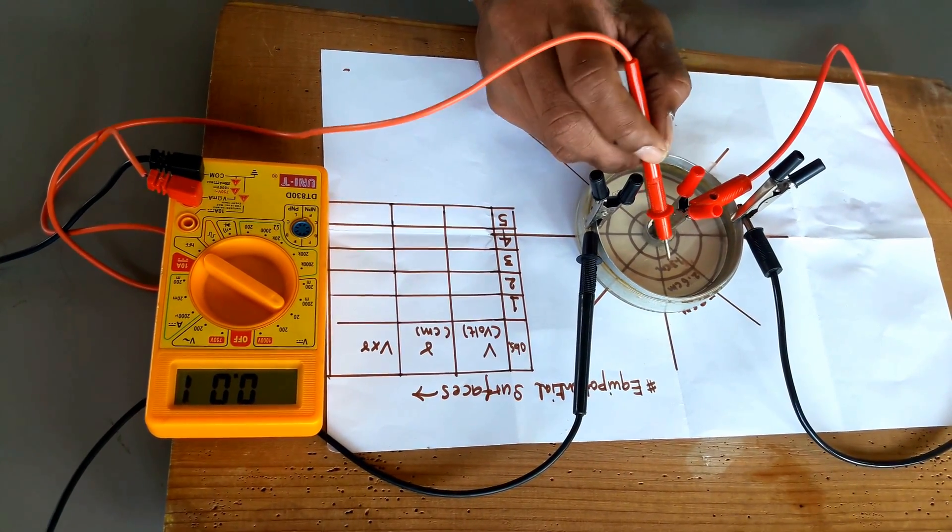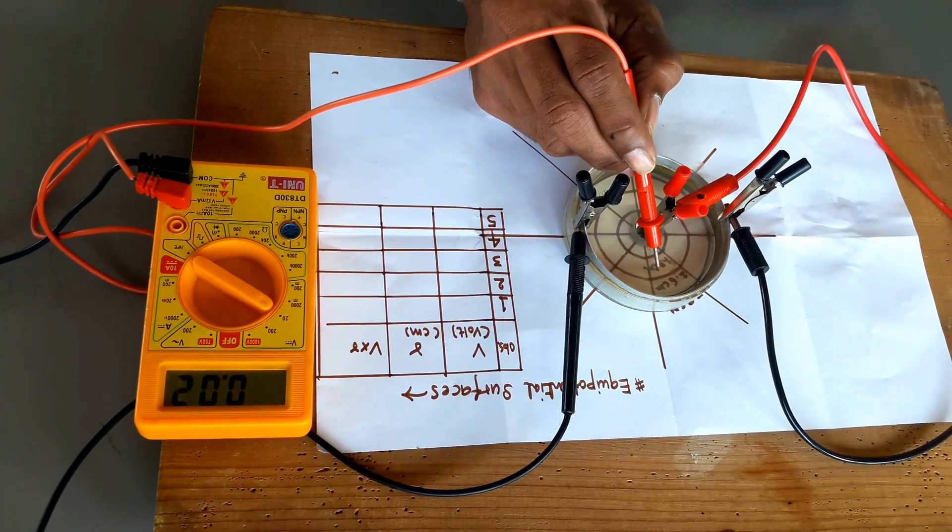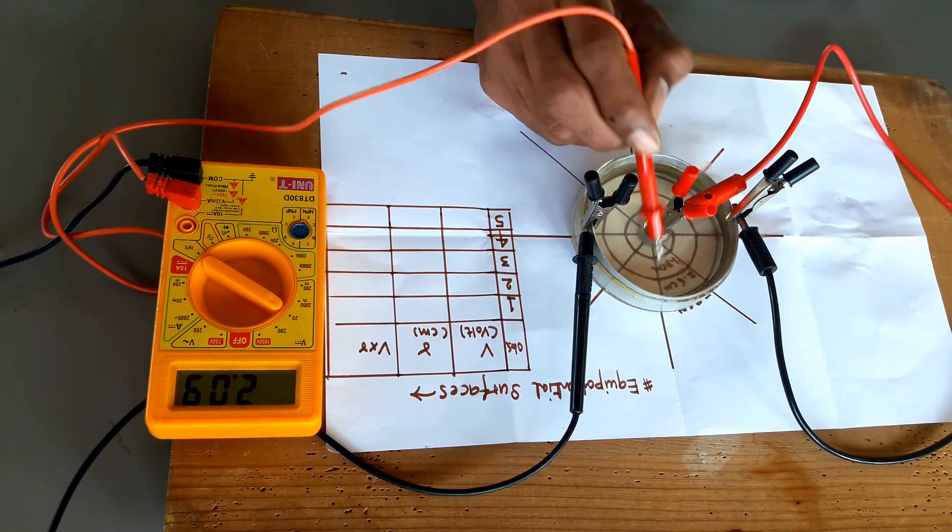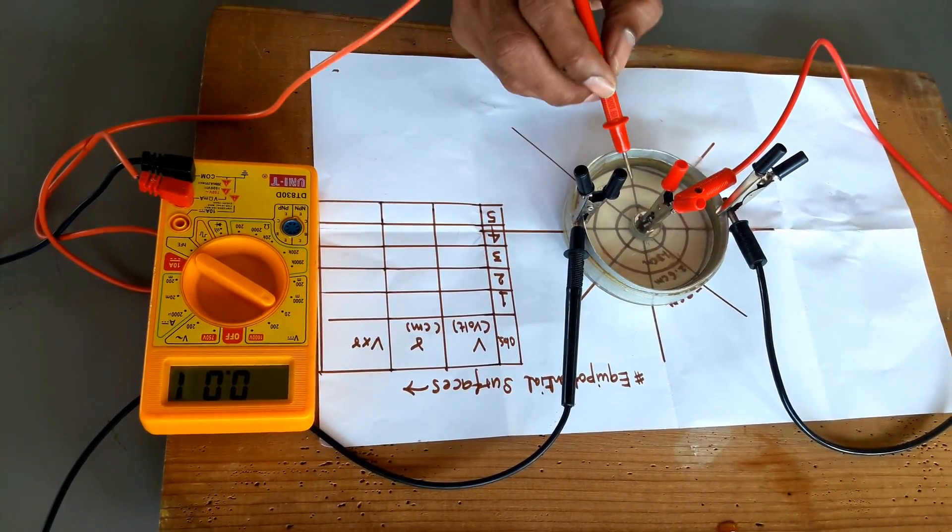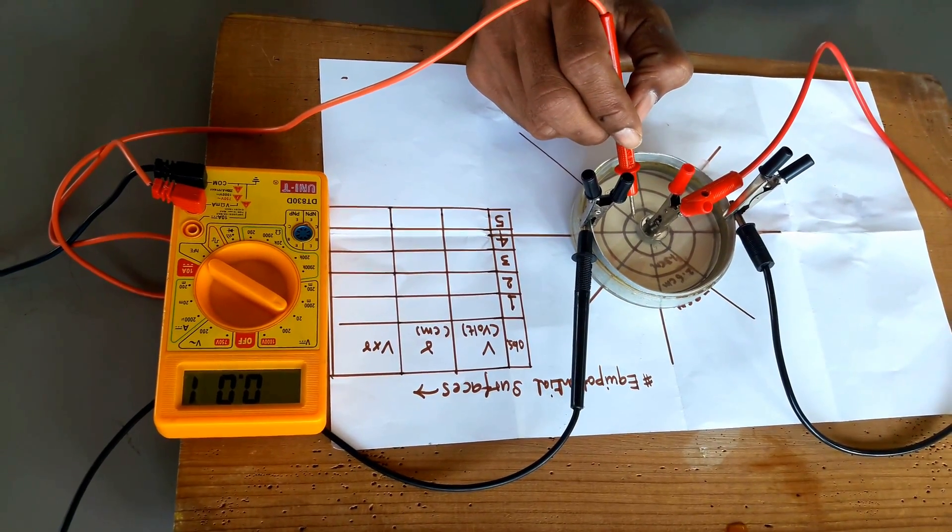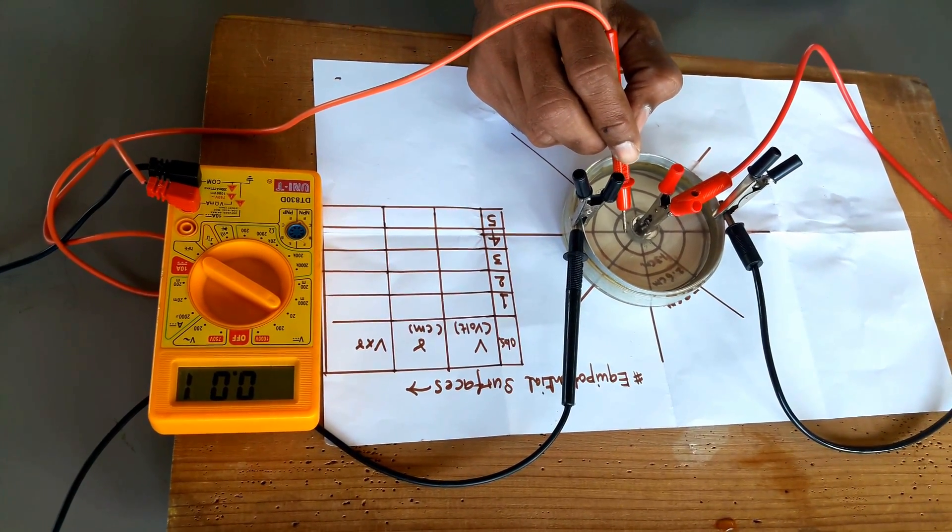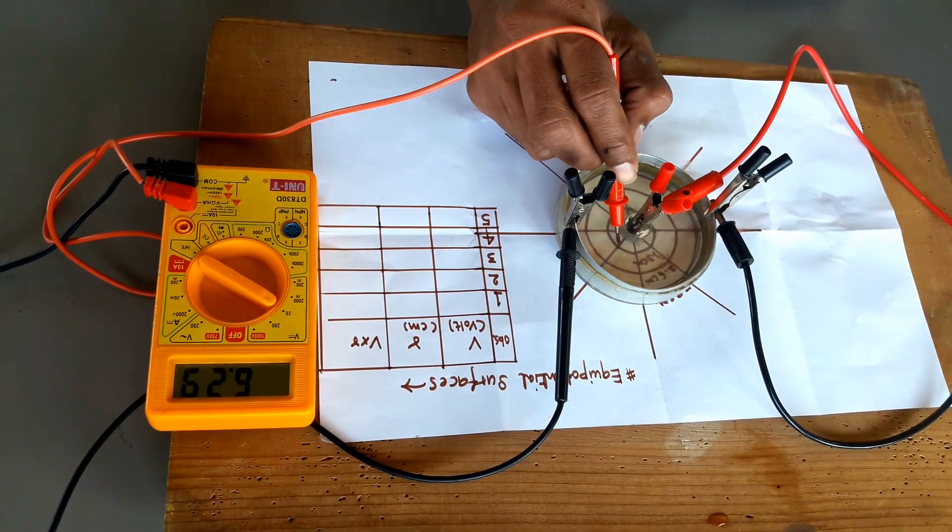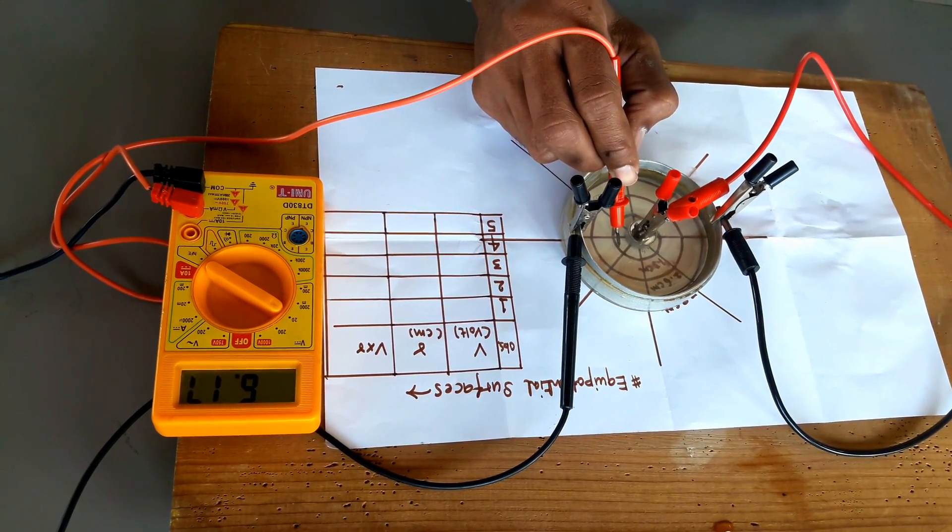The circles are at 1.3 cm, 2.6 cm, and 3.9 cm. Let us find what is the electric potential on the first circle, on the periphery of the first circle.